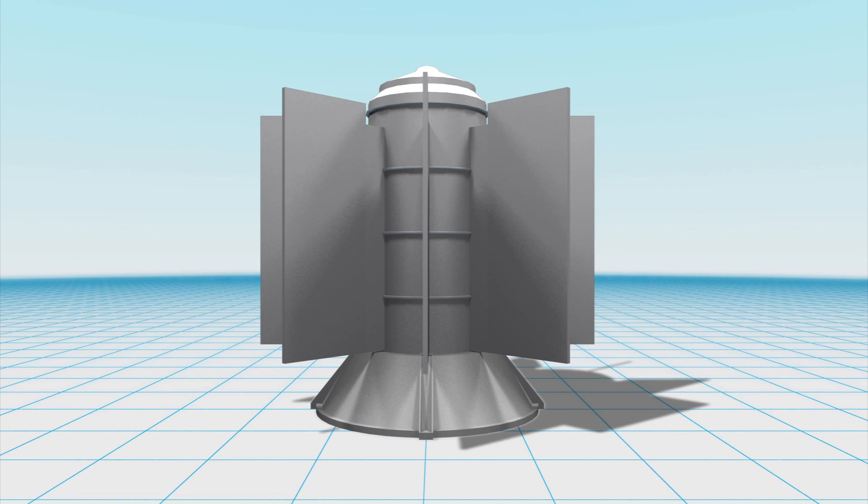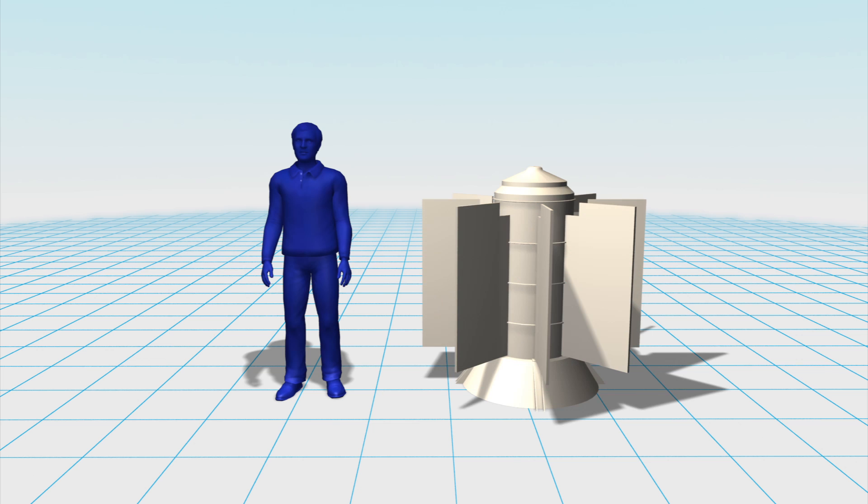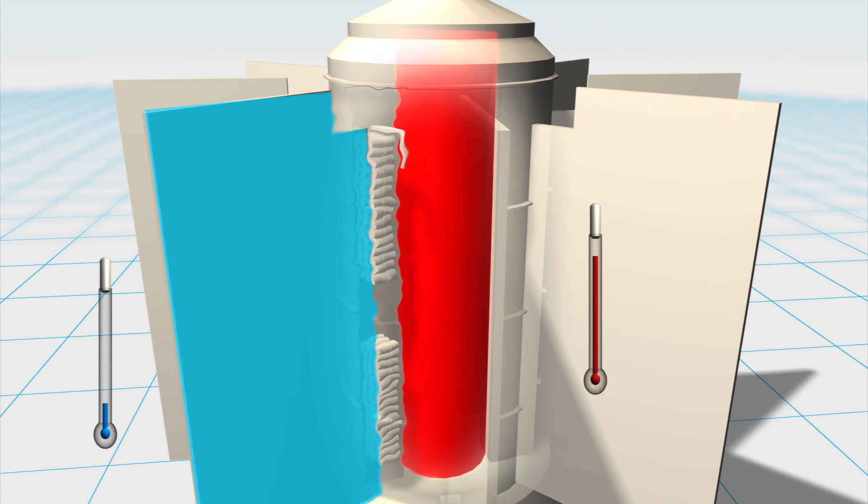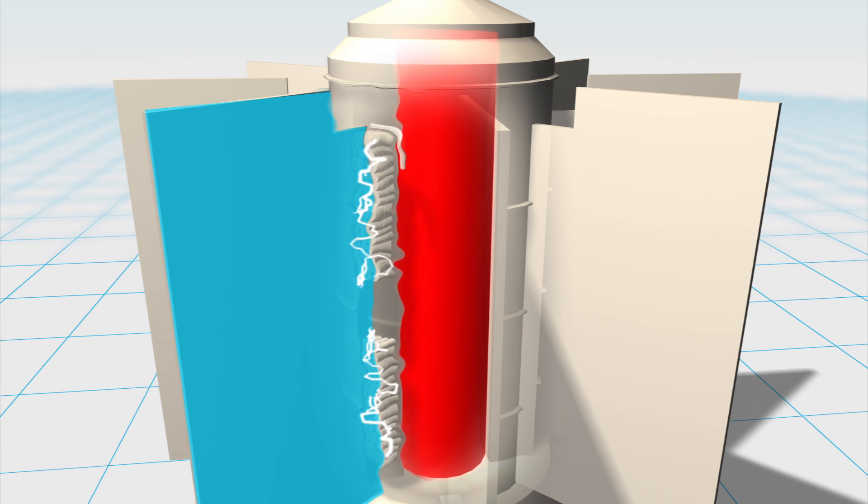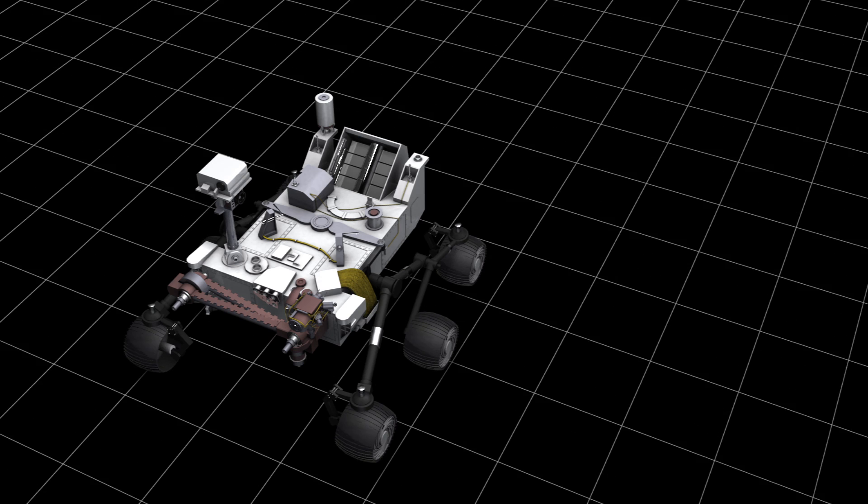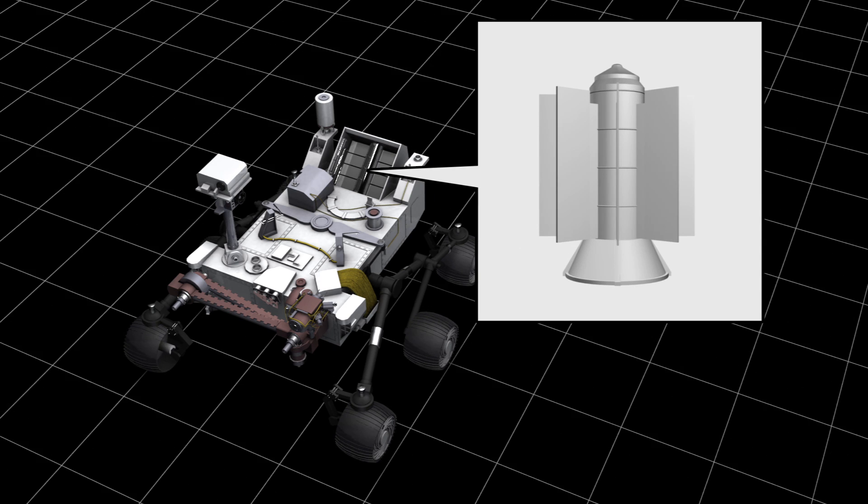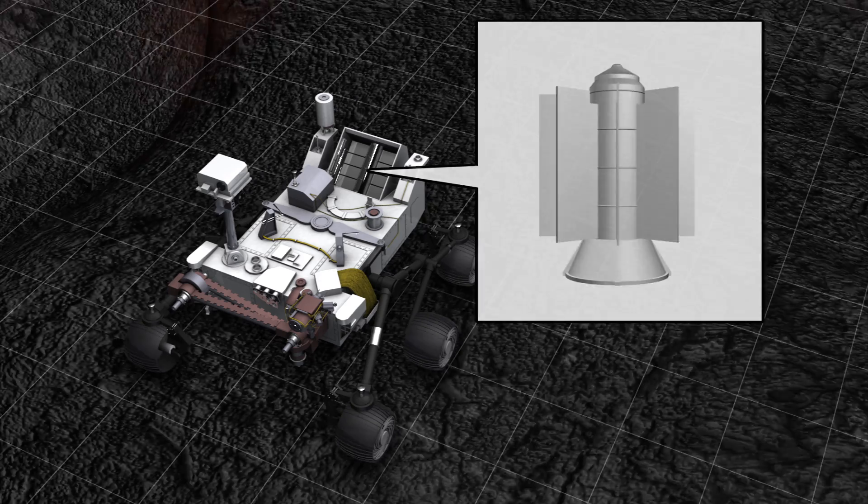In a radioisotope thermoelectric generator, or RTG, plutonium-238 generates heat, which is harnessed by thermocouple modules to produce electricity sufficient to power the Mars Curiosity rover or the Cassini space probe.